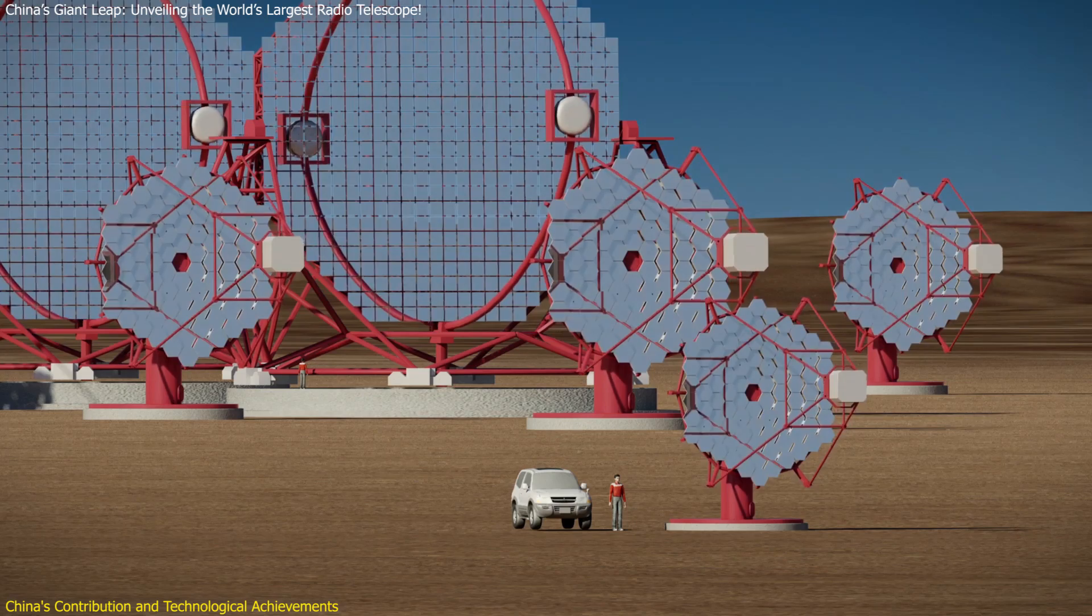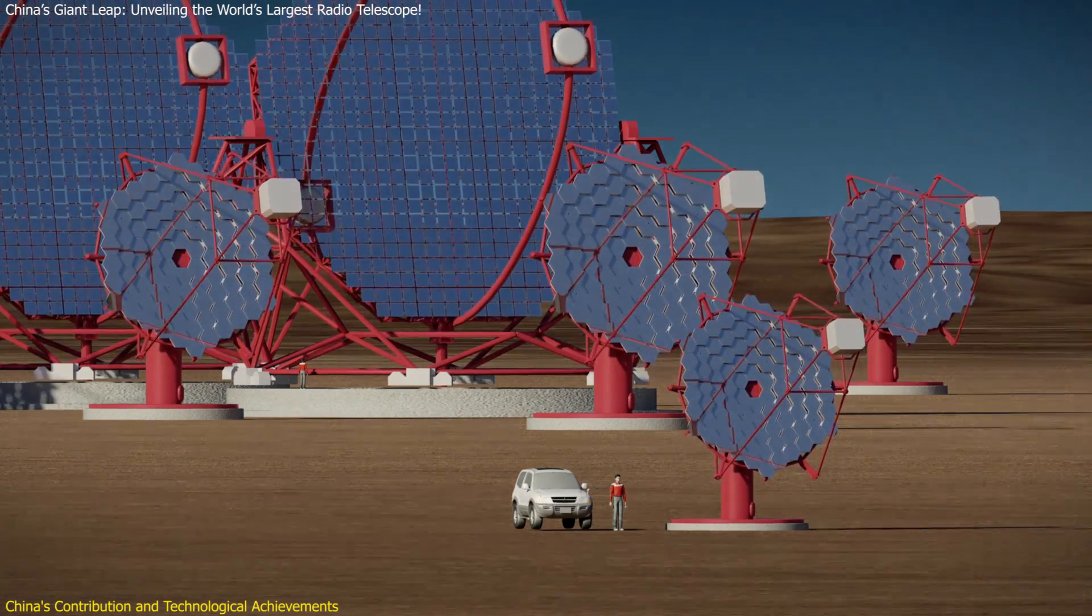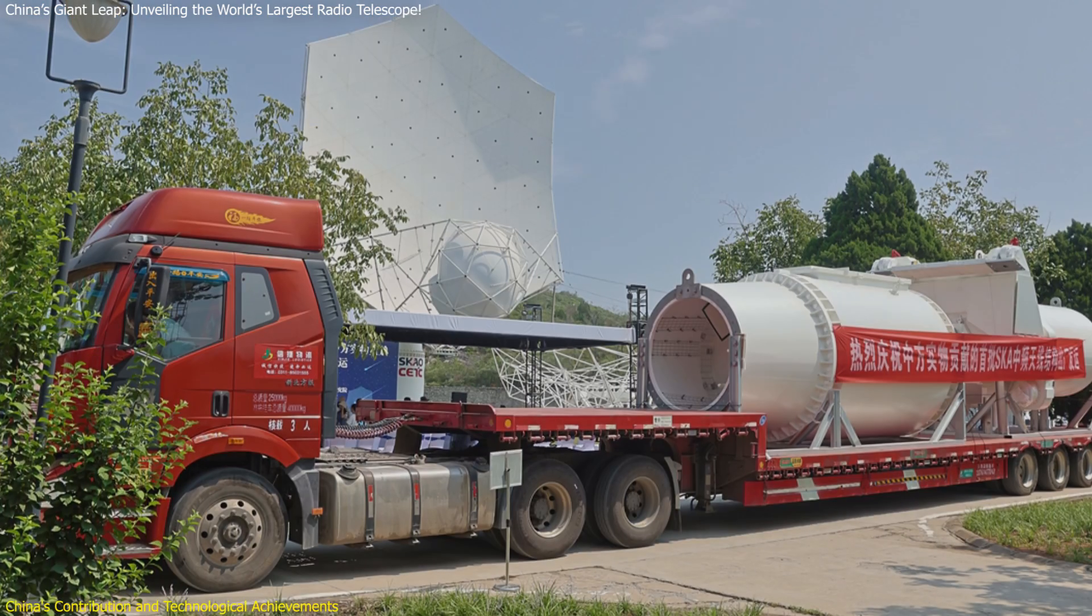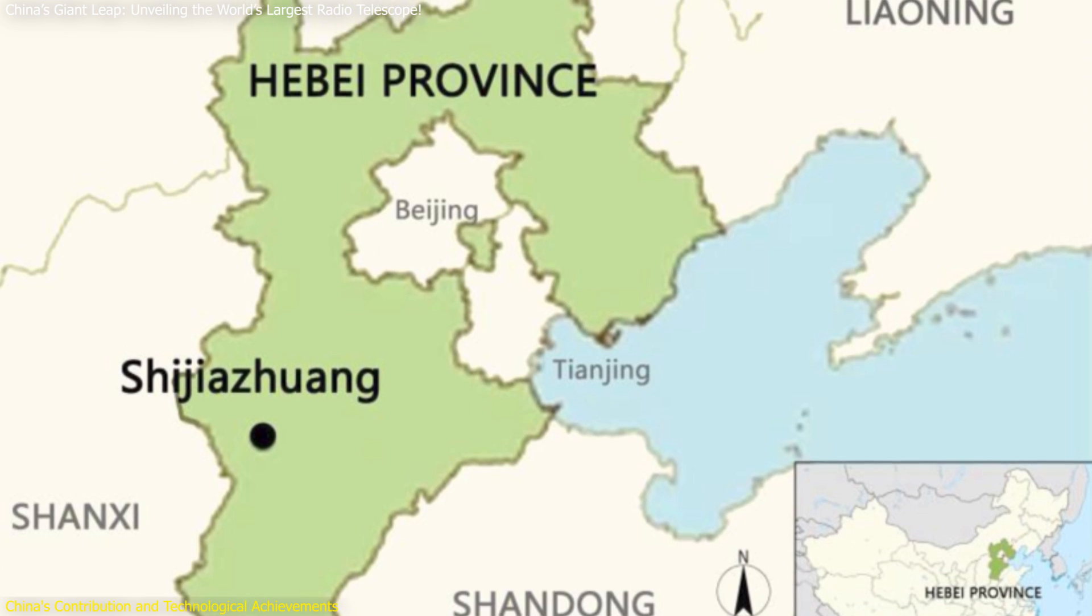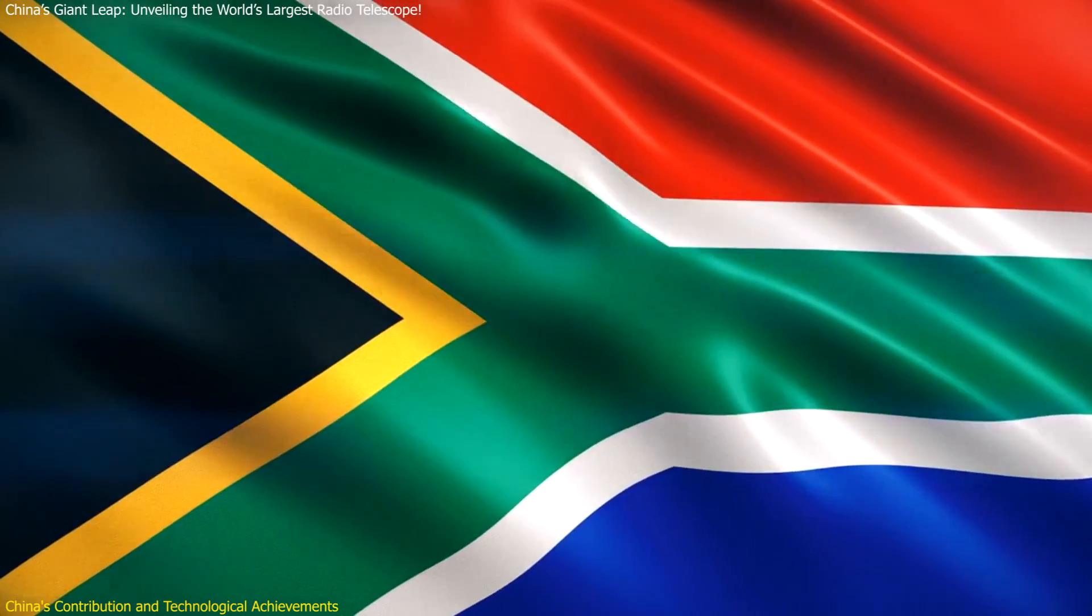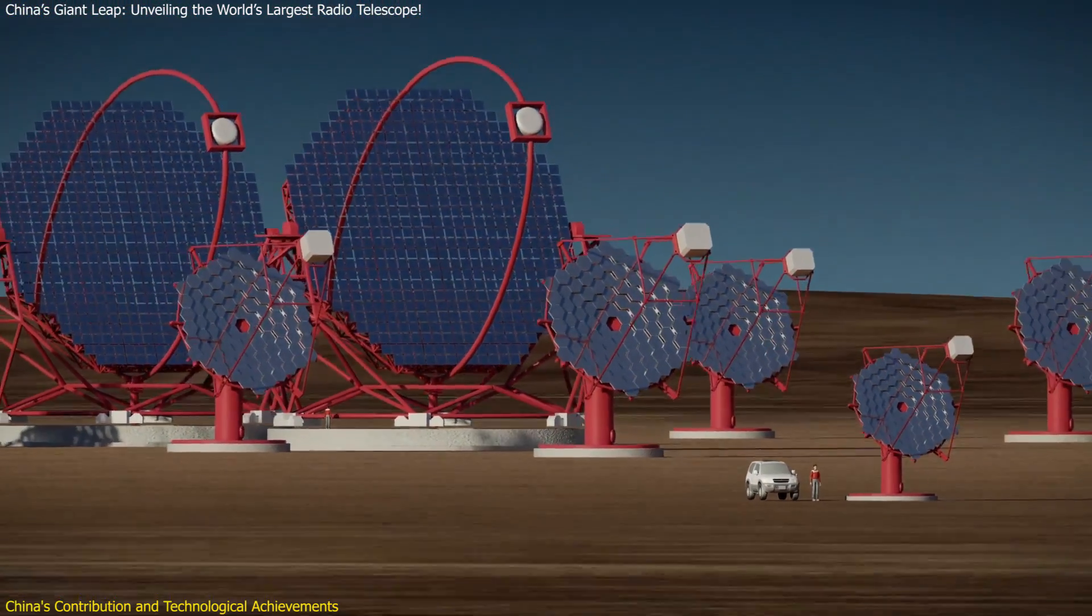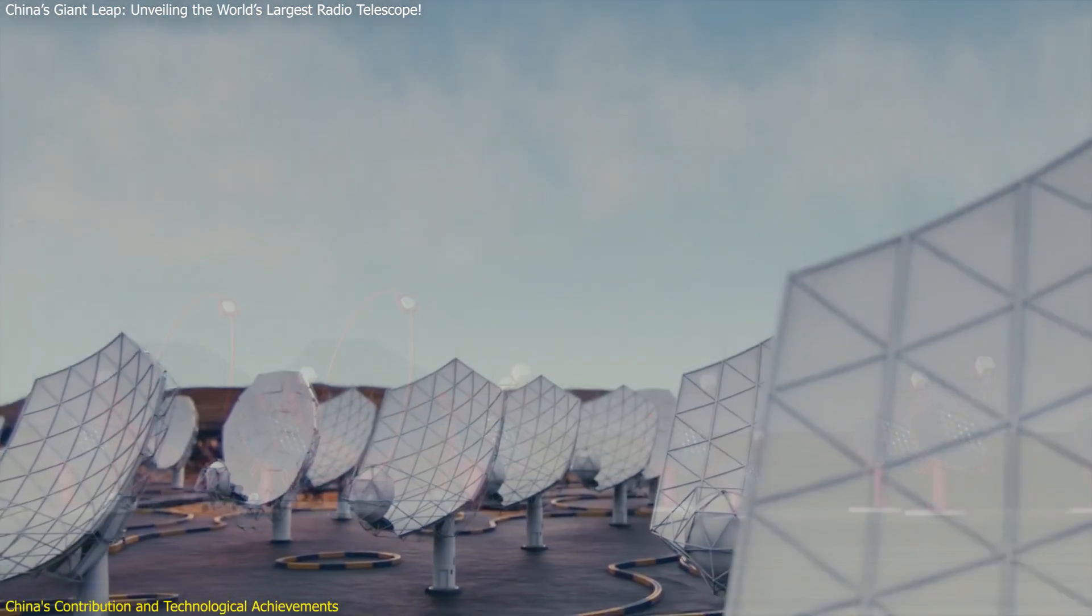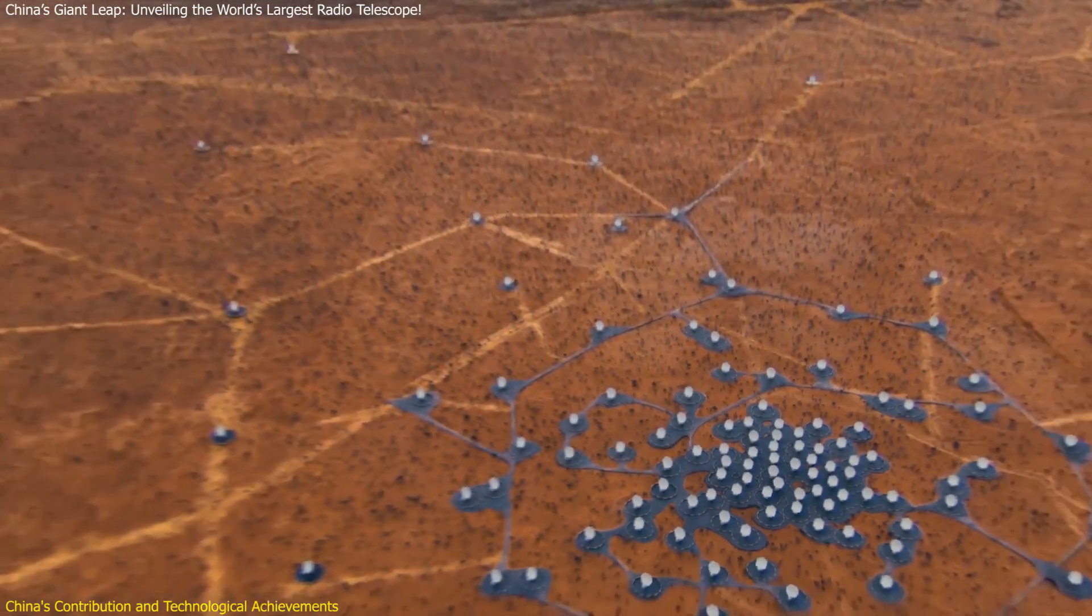Transporting these massive antennas from China to South Africa is a logistical marvel in itself. The first batch of four antenna dishes was transported by heavy lift trucks from Shijiazhuang, North China's Hebei Province, to the port in Tianjin Municipality. From there, they are shipped to South Africa, where they will be installed in the Karoo Desert. This complex logistical operation marks the beginning of the mass production phase, with a total of 64 SKAO-MID dishes expected to be installed by the end of 2026.